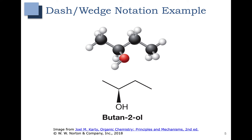Let's look at a quick example. Here we have carbon 1, carbon 2, carbon 3, and carbon 4. You can see in the picture that the OH is sticking out — the oxygen is shown here in red — so the OH is coming towards you. The hydrogen is not explicitly drawn in, but you can tell it's sticking back, filling in that other position.